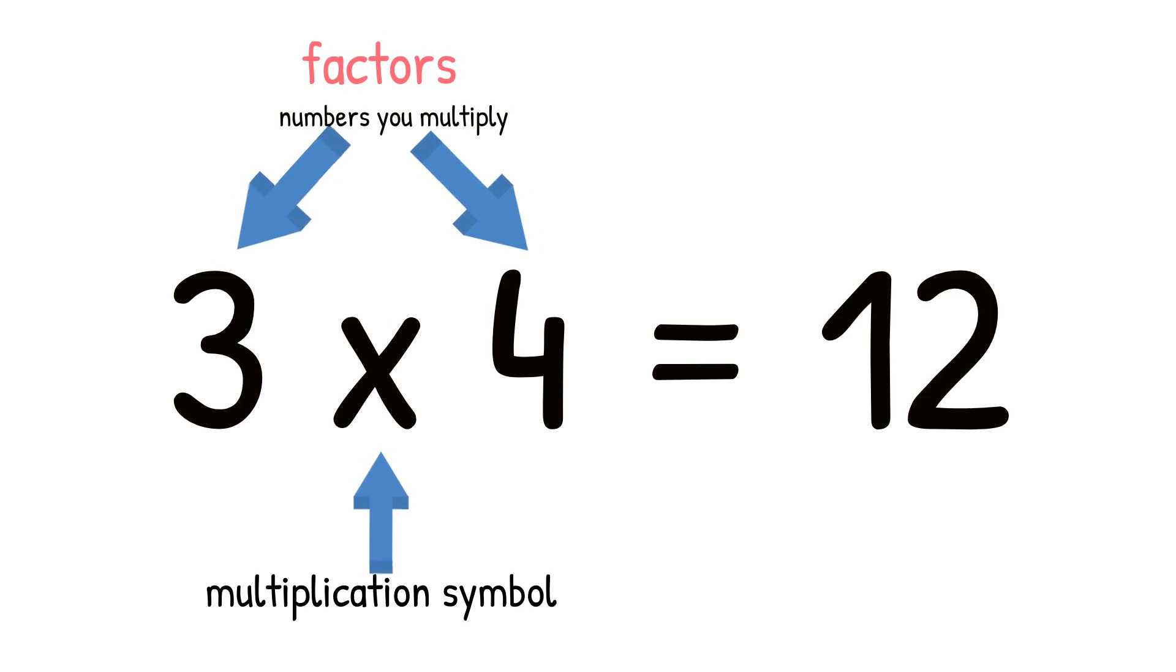These two digits are called factors. Factors are the numbers you multiply. And the result of a multiplication equation is called the product.